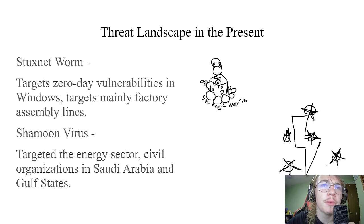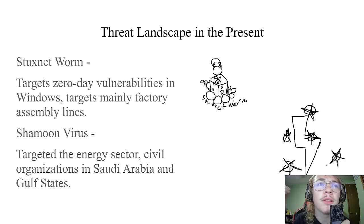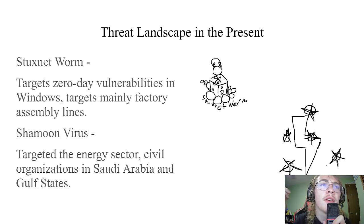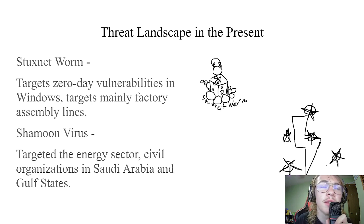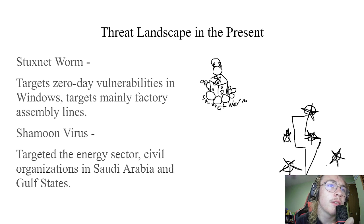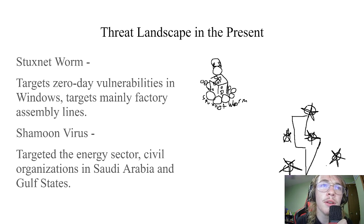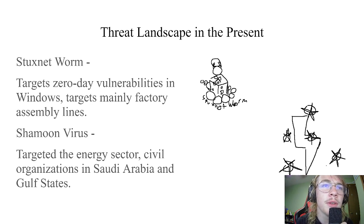Now let's talk about the present threat landscape, pertaining to the early 2000s to the present. First up is the Stuxnet worm — an attack on industrial sectors, mainly machinery and assembly lines, and also an attack in a certain area: Iran and its nuclear facilities. Stuxnet used zero-day vulnerabilities, which responders have zero days to respond to when hackers attack. Unlike other worms that spread through the internet, this worm spread through USB, and it went on to be named the first cyberweapon.